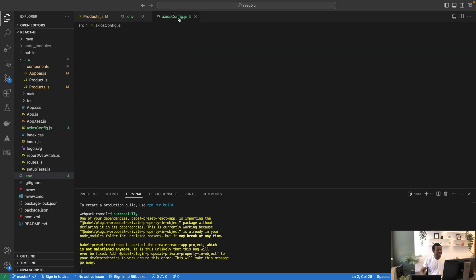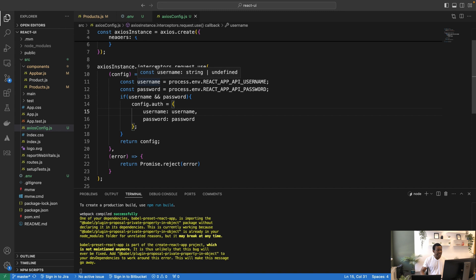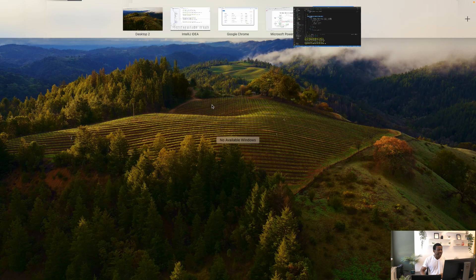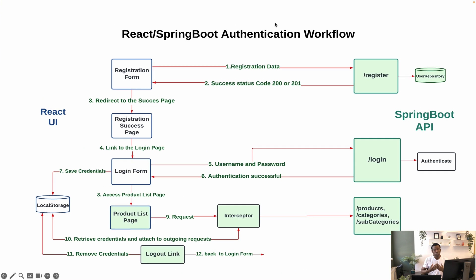We are able to use an interceptor, as you can see right here. Before we continue, I want to show you the workflow of how authentication and authorization works from React to Spring Boot. Let's go through this diagram. I've marked some in green — this is what we already implemented — and the ones in white are the ones we are going to implement after now.